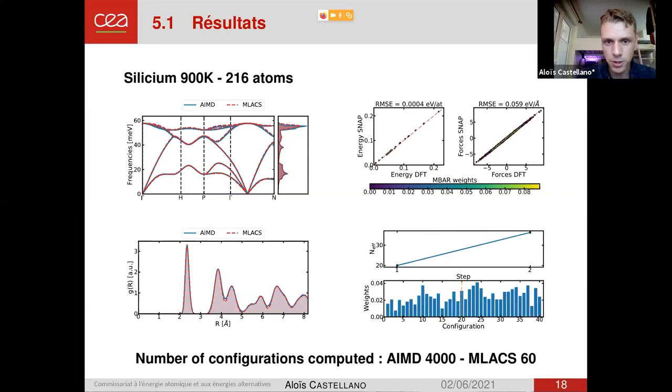For these other examples, I will just show them rapidly to show what kind of system we can study with this method. So for example, here is silicon at 900 Kelvin, so at high temperature, and we see here very good results again, with a very, very low number of configurations, only 60 configurations to compute this average.